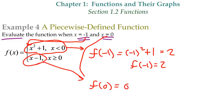So f of zero equals zero minus one, which equals negative one. So f of zero equals negative one. And that's it for that dude.